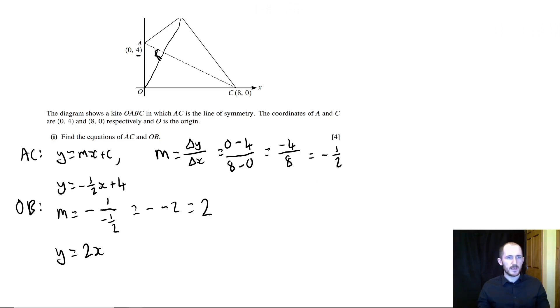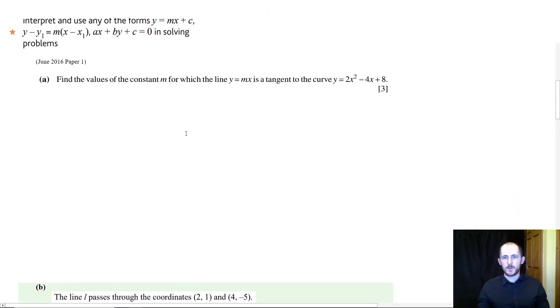Okay, so let's go on to the next one. The next point says we need to be able to interpret and use any of the forms, y equals mx plus c, y minus y1 equals m times x minus x1. So this is a formula for working out the equation of a line. And all you need to know is that x1 and y1 are just a set of coordinates, but they have to be the same coordinate. And ax plus by plus c equals 0. So all three of those are just different forms of the equation of a straight line, all completely equivalent.